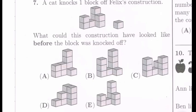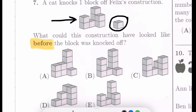We're on to problem number 7. A cat knocks one block off Felix's construction. What could this construction have looked like before the block was knocked off? Let's highlight before the block was knocked off, that's what we want to figure out. And just for reference, this is Felix's construction, and this is the block that was knocked off. We're going to use a strategy for block problems called the aerial view.